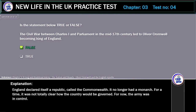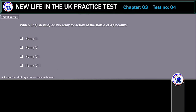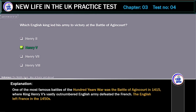Which English king led his army to victory at the Battle of Agincourt? Options: Henry II, Henry V, Henry VII, or Henry VIII. The correct answer is Henry V. One of the most famous battles of the Hundred Years' War was the Battle of Agincourt in 1415, where King Henry V's vastly outnumbered English army defeated the French. The English left France in the 1450s.